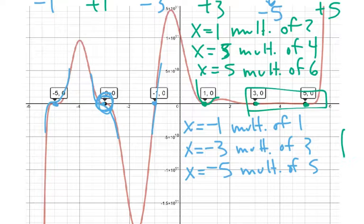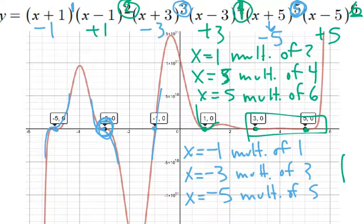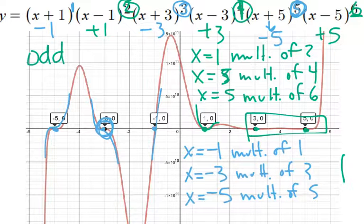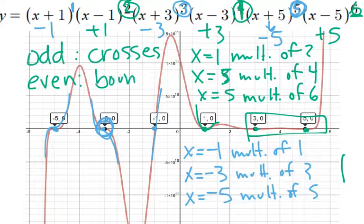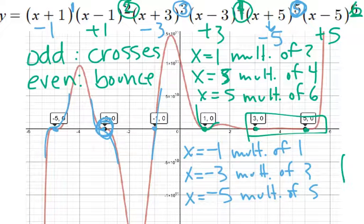So if you need to write any of that down, get it written down. Just remember: an odd exponent means it crosses through, and whatever the exponent is is its multiplicity. An even exponent means it's going to bounce, and whatever it is gives it its multiplicity. That's just to help us understand how to draw a graph — it gives us an idea of what to do when we have those x-intercepts.